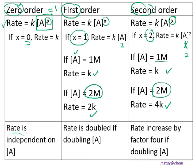With this simple calculation, we can conclude that the rate of reaction is independent of concentration A if it is zero order. For first order, the rate of reaction doubles if concentration A is doubled. For second order, the rate of reaction increases by a factor of 4 if we double the concentration A.